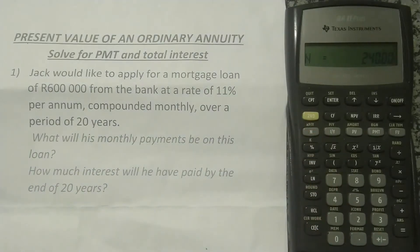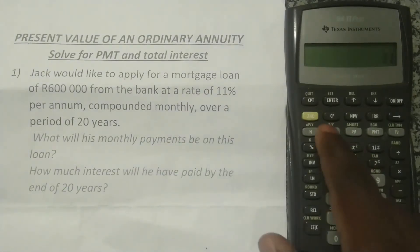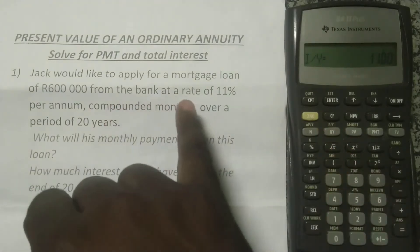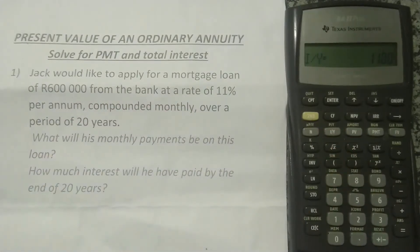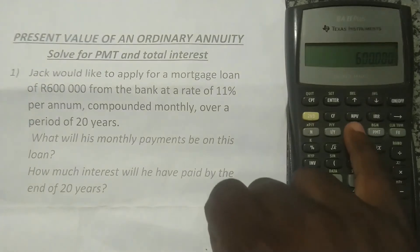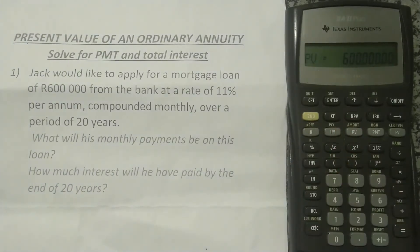Next we enter the interest rate. We're told it's 11% per annum, so press 11 then I/Y. The mortgage loan amount is R600,000, and since he receives this money today to buy the property, we enter 600,000 and press PV for present value.